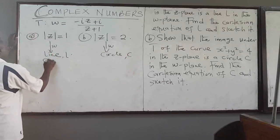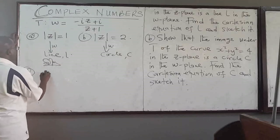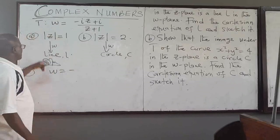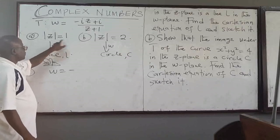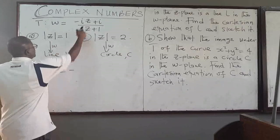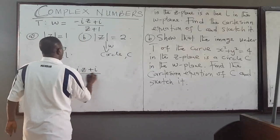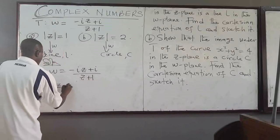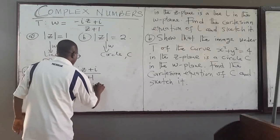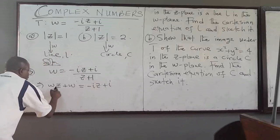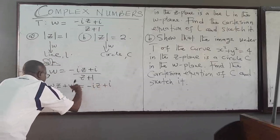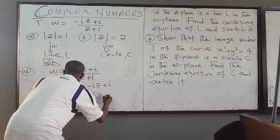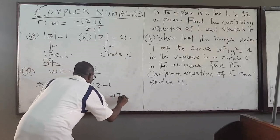Taking part A, we have W here. We want to rewrite it and find the absolute value, so that once we have the absolute value of Z, we replace it with 1. So we have i(Z + i) all over (Z + 1). Expanding, we get WZ + W = -iZ + i. Grouping the Z terms, W minus i equals negative iZ, which gives us minus WZ.